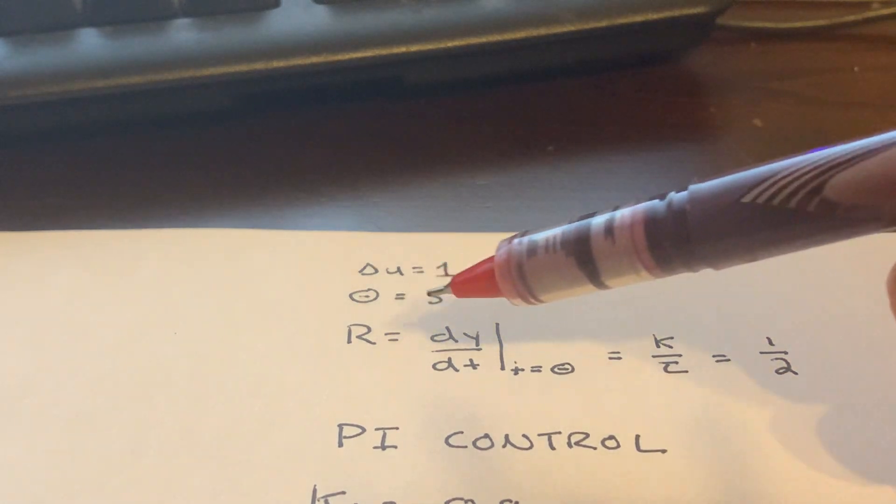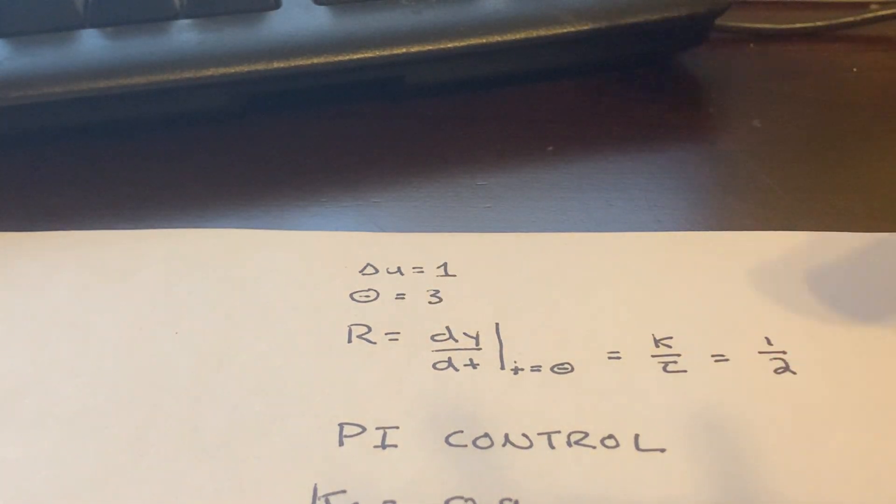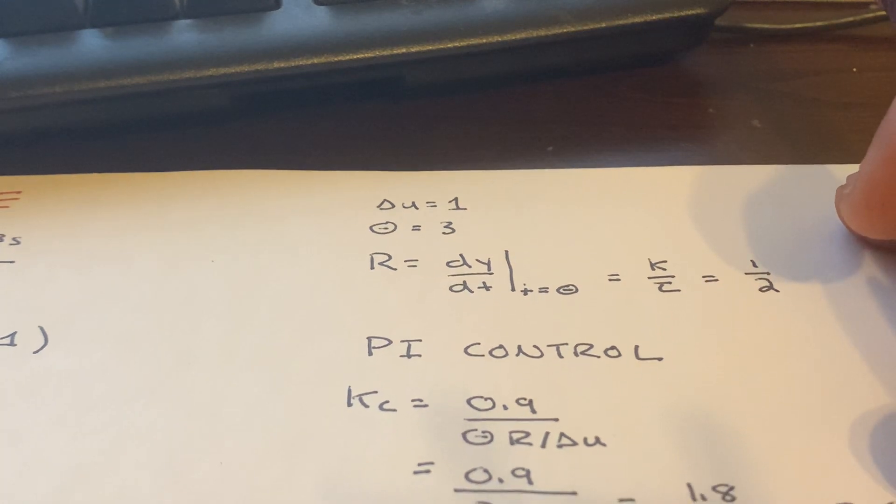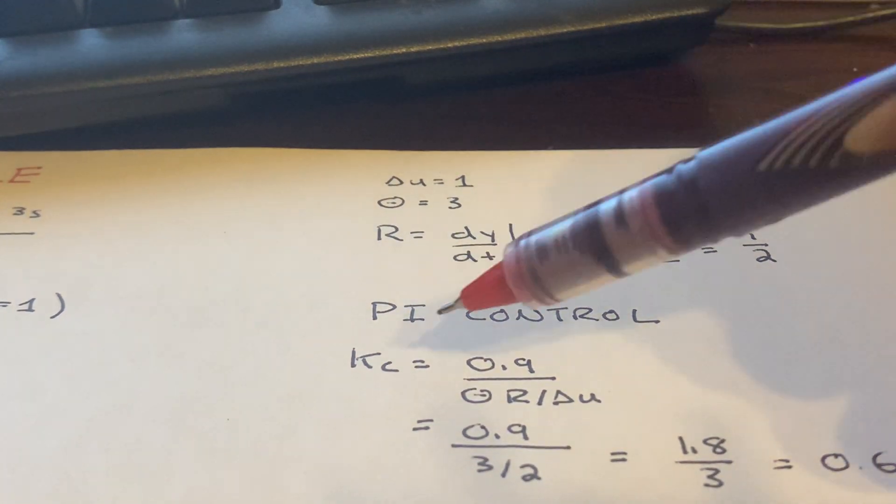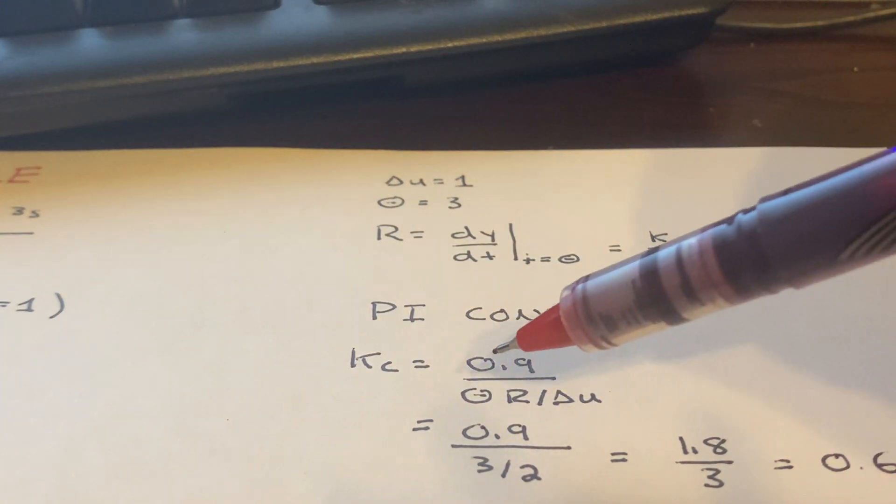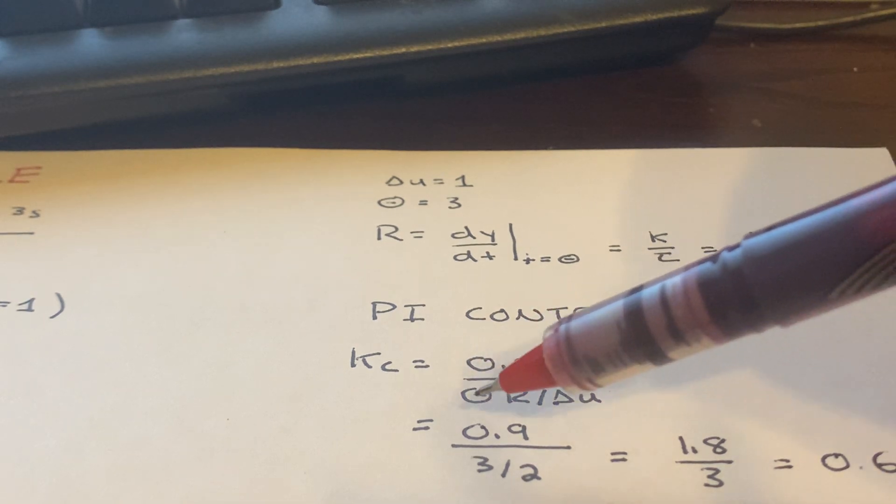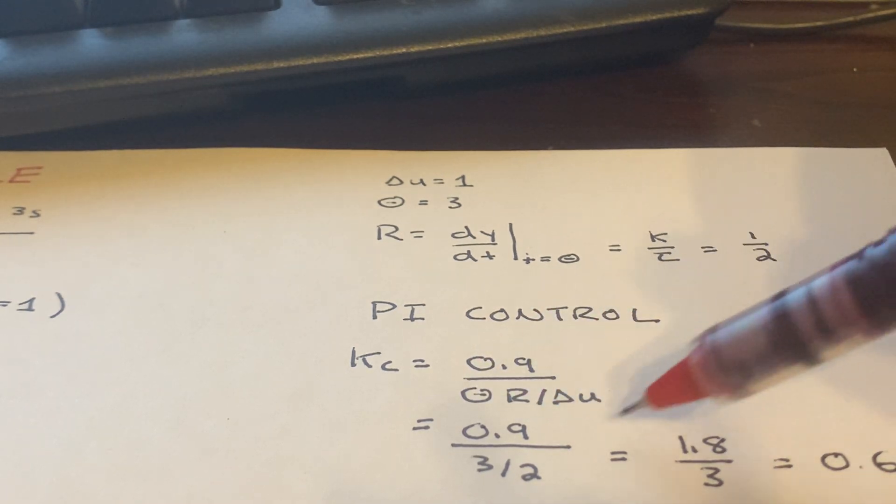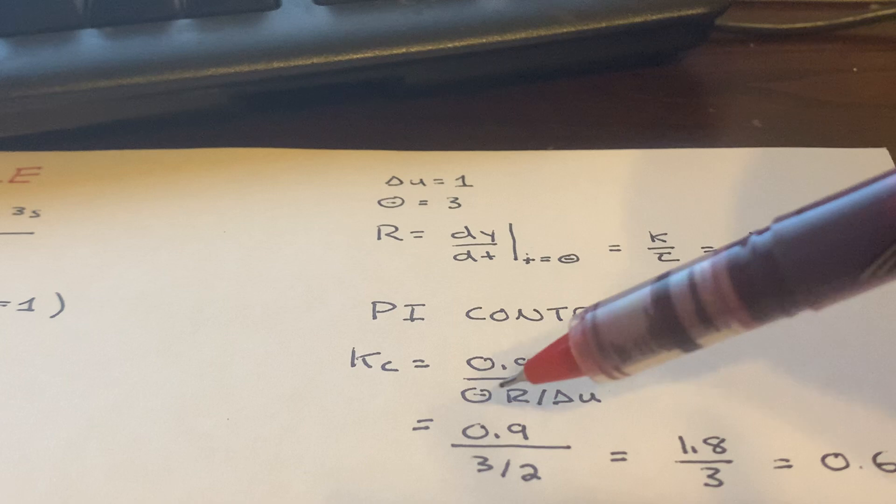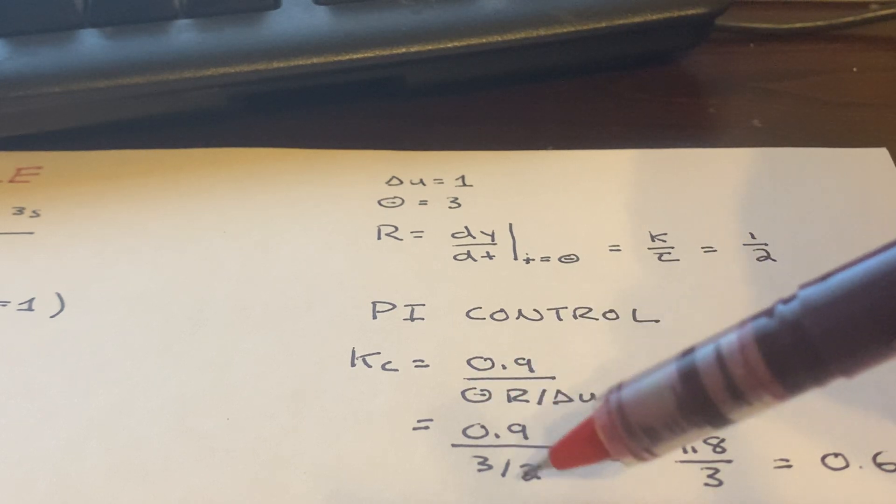So we have delta u is 1, theta is 3, and r is a half. For a PI controller, the proportional gain is 0.9 over theta times r all over delta u. We can ignore the delta u. So theta is 3, r is a half.